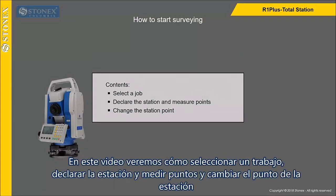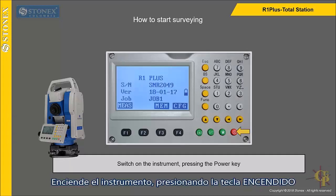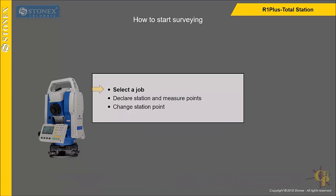In this video, we see how to select a job, declare the station and measure points, and change the station point. Switch on the instrument by pressing the power key to select a job.